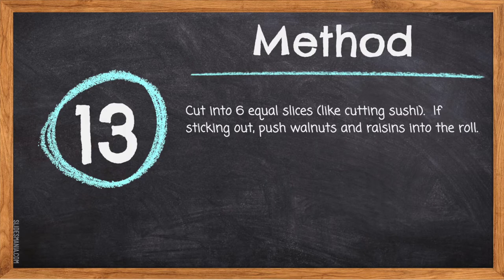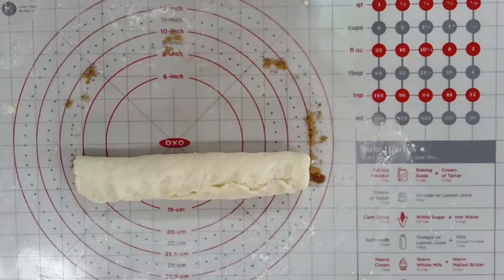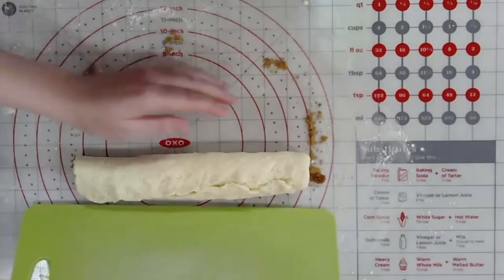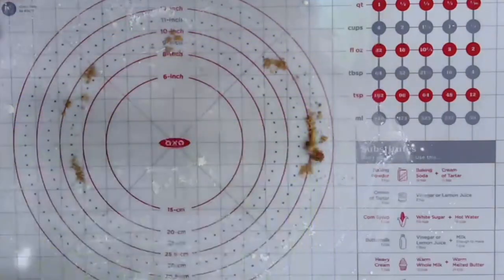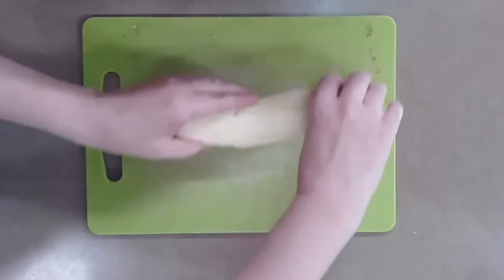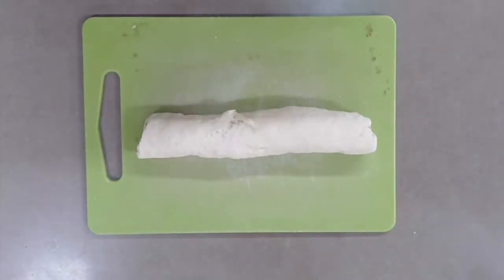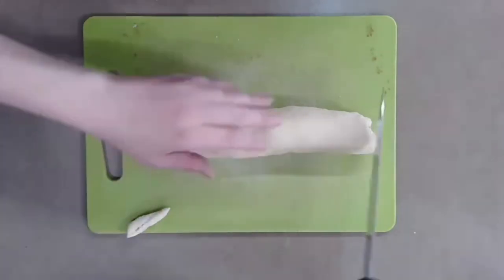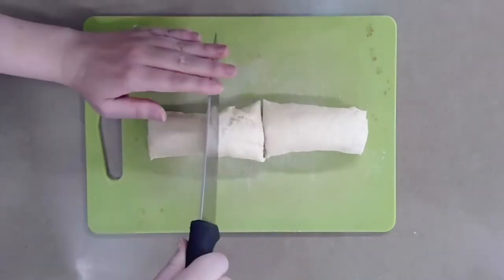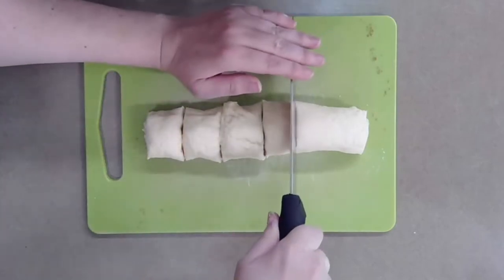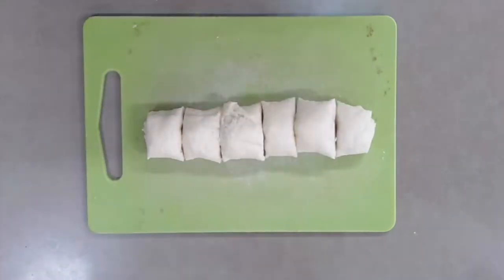Step 13: Transfer the jelly roll to a cutting board and cut into six equal slices like cutting sushi. Trim any jagged ends and compost them. Divide the roll in half, then cut each half into three equal slices. If you don't want the roll squished by a chef's knife, you could use a piece of unflavored dental floss — it slices the roll while keeping its circular formation. Avoid mint-flavored floss as it will affect the taste.